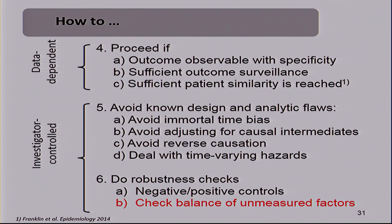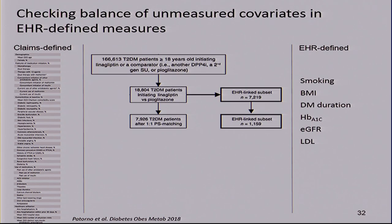Going back to investigator-controlled how-to: do robustness checks, negative and positive controls, and check balance of unmeasured factors. I'm largely working in the claims data space, but as EHR data become more available and linkable to claims data, this provides an opportunity for routine activity. On the left side are about 120 claims data covariates defined in a claims data study with 160,000 type 2 diabetes patients over 18, ending with about 8,000 one-to-one propensity score matched patients — linagliptin versus pioglitazone. Active comparator, new user study design, one-to-one propensity score.